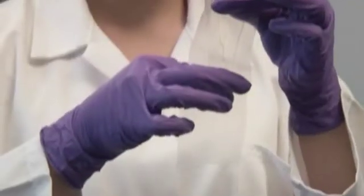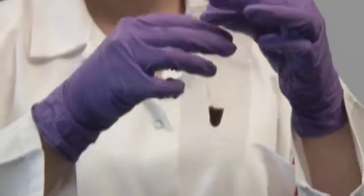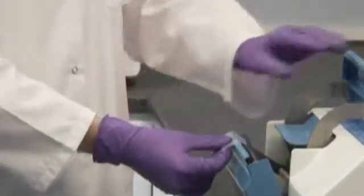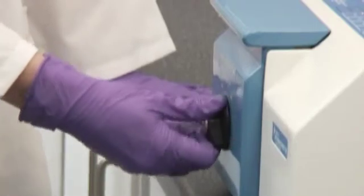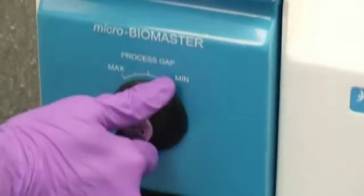Effective blending of the sample can be achieved by placing the Microbag over one single Stomacher paddle. The paddle clearance can be varied during processing of small samples by using the adjustable door panel.